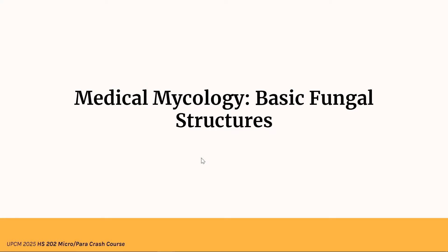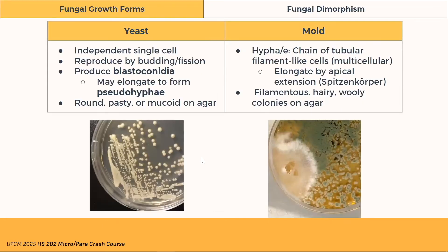Now let's talk about basic fungal structures. Fungi can exist as yeasts or molds. Yeasts are independent single cells that are produced by budding or fission, and they produce blastoconidia, which may elongate to form pseudohyphae. On the agar plate, they look round, pasty, or mucoid — they look like bacterial colonies.